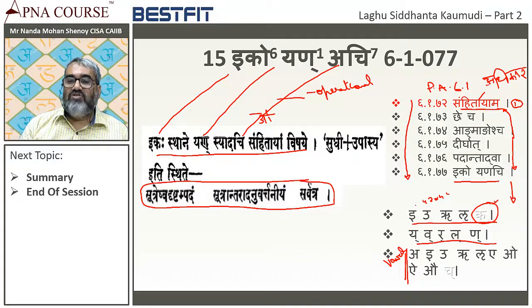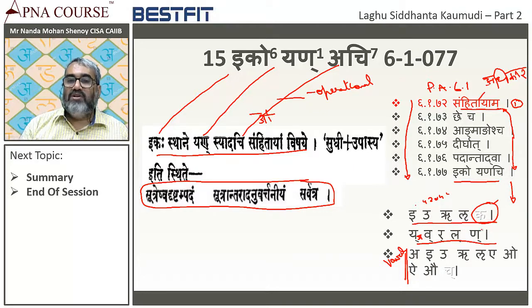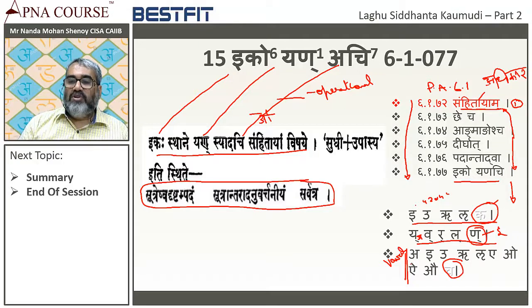Yan means Y, V, R, L — Halantyam applies here too; Na is also It. Yan gives Y, V, R, L. Achi covers A, I, U, R, L, A, O, I, A — Ch is It — so Ach represents all vowels. In summary: Ik means four characters, Yan means four characters, and Ach includes all vowels (nine-plus characters).